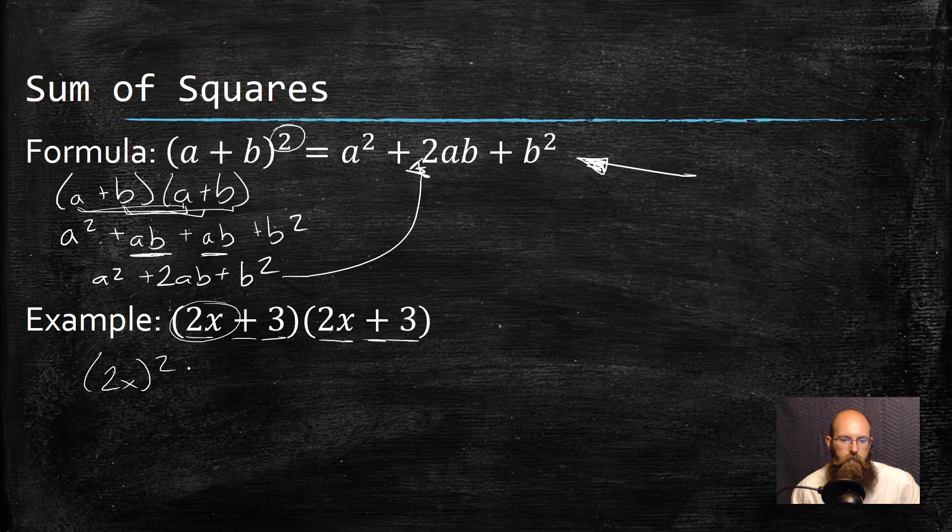So that a² means my first thing in my set of parentheses squared. So 2x squared. My next thing says 2 times a, which is the first thing in my parentheses, and b, which is the second thing in my set of parentheses. So 2 times 2x times 3 + b². b is my last thing in my parentheses. So in this case, not b, it's 3².